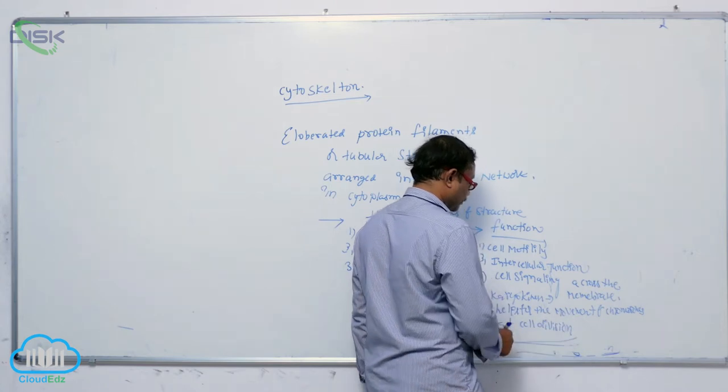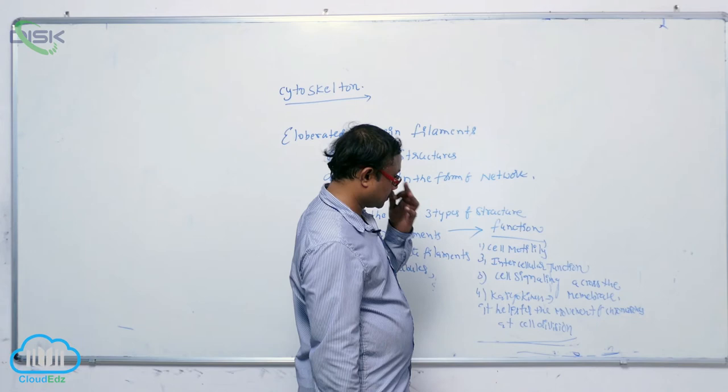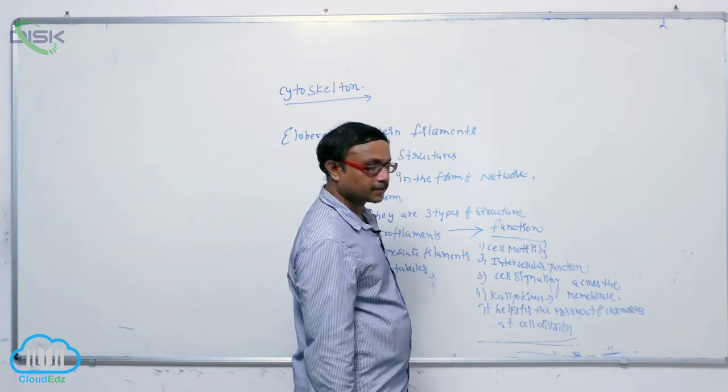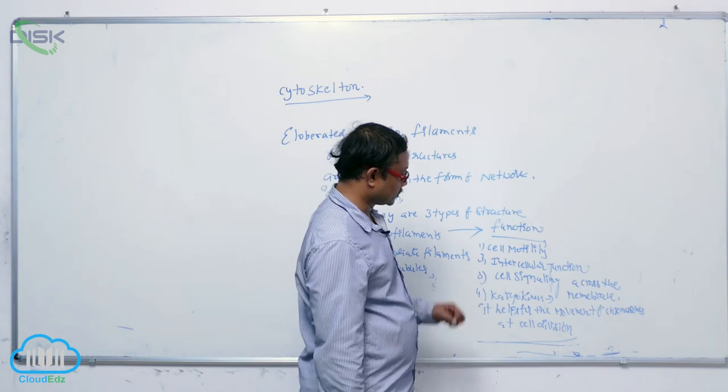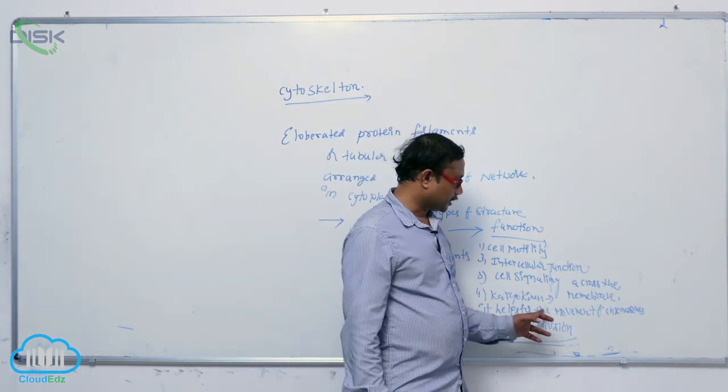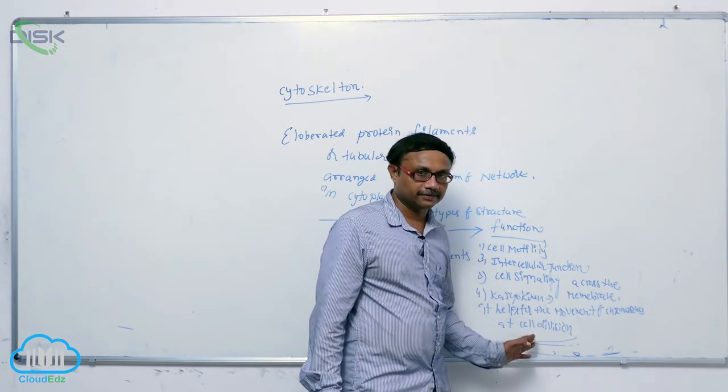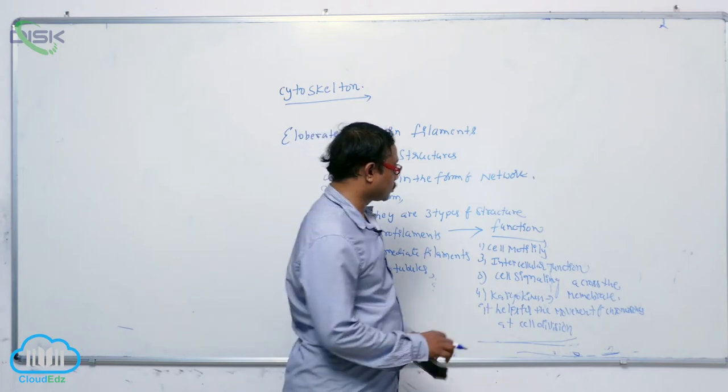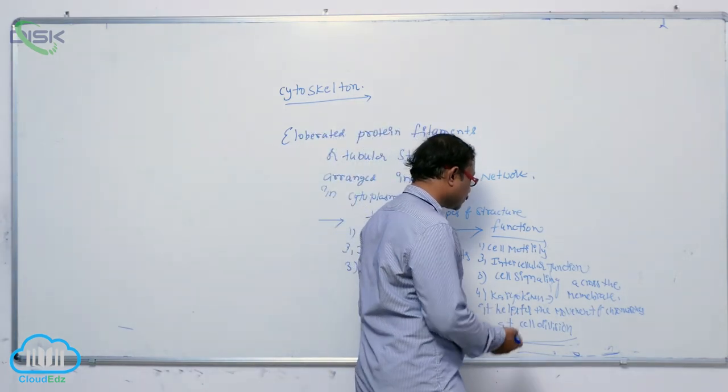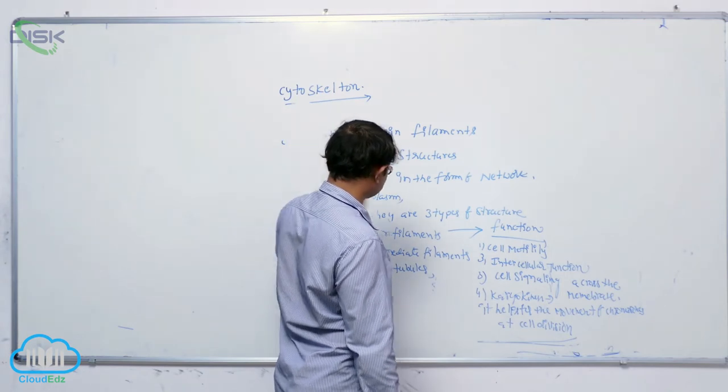So cell motility, intercellular junctions, cell signaling across the membrane, and karyokinesis. It means it helps the movement of chromosomes during cell division and provides mechanical strength to the cell. These are the functions of the cytoskeleton.